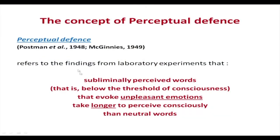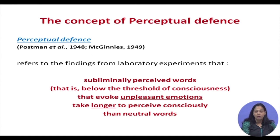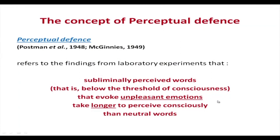This theory was suggested by Postman and others in 1948 and McGuinness in 1949. It refers to findings from laboratory experiments suggesting that subliminally perceived words — those just below the conscious level — that evoke unpleasant emotions take longer to perceive consciously than neutral words. McGuinness showed this through laboratory experiments as early as 1949: when we do not wish to perceive a certain word, a filter mechanism keeps it from our conscious self.